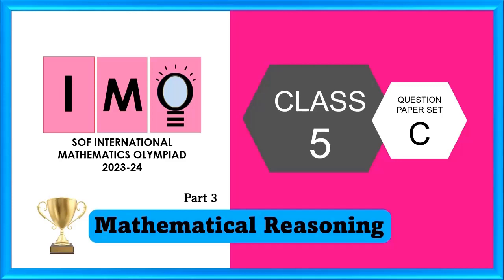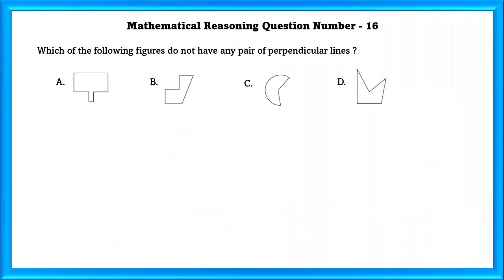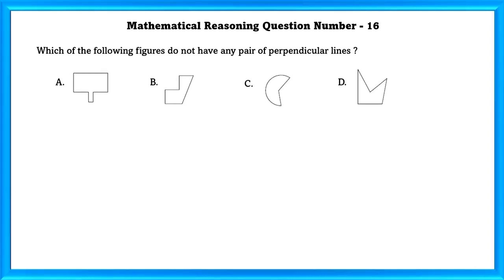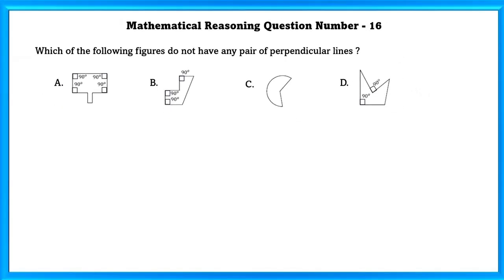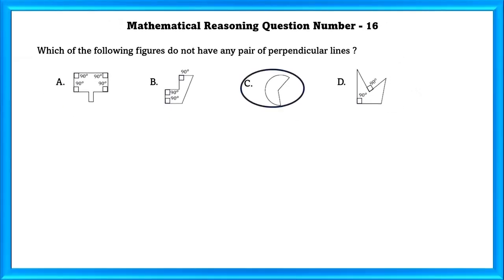IMO Class 5 Set C, Mathematical Reasoning, question number 16: Which of the following figures do not have any pair of perpendicular lines? A has perpendicular lines. B also has perpendicular lines. D has perpendicular lines. But C does not have perpendicular lines. So C is the correct option.